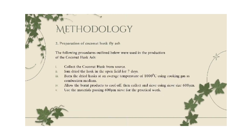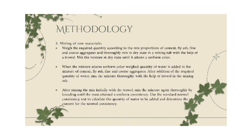The following procedures will be used in the production of coconut husk ash. First, collect the coconut husk from source. Second, sun-dry the husk in the open field for 7 days. Third, burn the dried husk at an average temperature of 100 degrees Celsius using cooking gas as a combustion medium. Fourth, allow the burnt products to cool off, then collect and sieve using sieve size 600 microns. Lastly, use the materials passing 600 microns for the practical work.